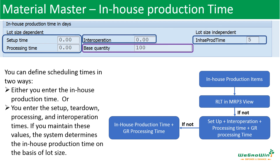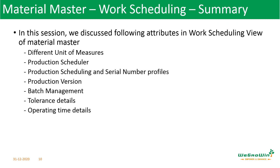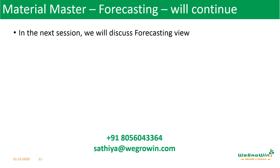The in-house production time maintained in MRP2, copied here as lot-size independent, means whether you release the order for 10 or 1,000 numbers, the same time will be taken. But using the base quantity approach, which varies with size, gives closer real dates for scheduling. Please note that these times — the lot-size dependent times — are also used to determine the replenishment lead time, which is very important. This was discussed in the MRP3 view, where the total time is used to arrive at the replenishment lead time used in available-to-promise and other areas. In this session we discussed attributes of the production scheduling view: different units of measure, production scheduler, production scheduling profile, serial number profile, production version, batch management, tolerance details, and operating time details. In the next session we will discuss the forecasting view.